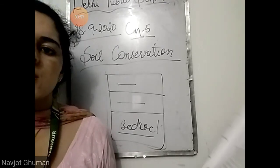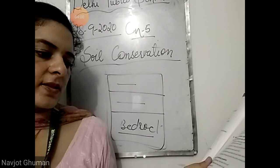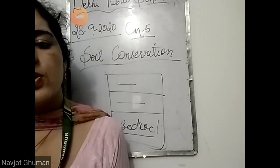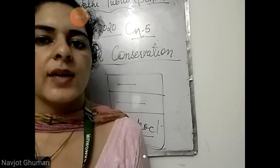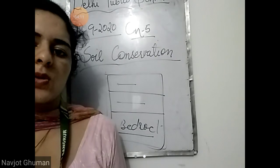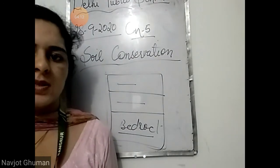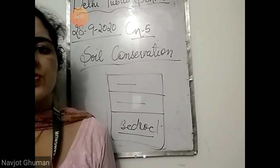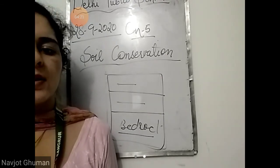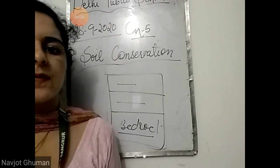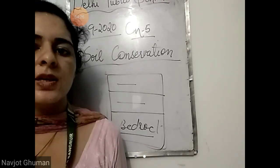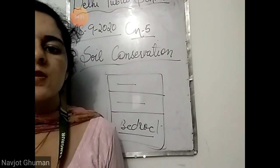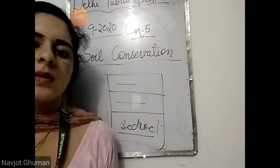What is soil conservation? List any three ways in which we can conserve soil. Protection of soil erosion is called soil conservation. We can conserve soil by: first, growing more and more trees; second, planting trees and bushes in open areas; and third, building dams across rivers to stop floods, which will prevent soil erosion.